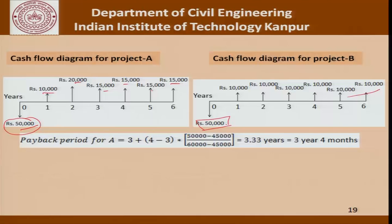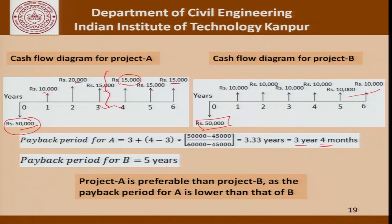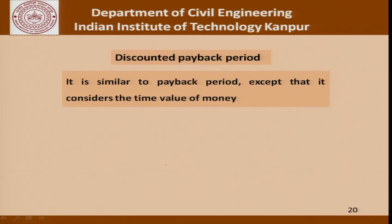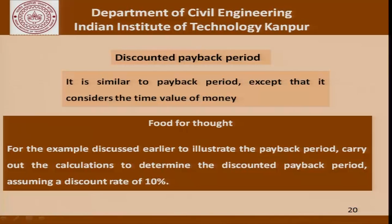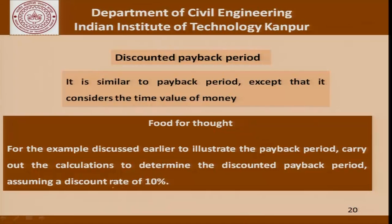The payback period for A is three years and four months: after three years the recovery is 10,000 + 20,000 + 15,000 = 45,000, and only 5,000 more is needed from the 15,000 of year four, which is one-third of that year — four months. For B the payback period is simply five years since recovery is 10,000 per year. Project A is preferable as its payback period is lower than B's. The discounted payback period is similar but considers time value of money — I leave it as an exercise at 10% discount rate.